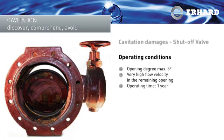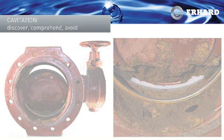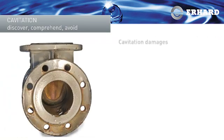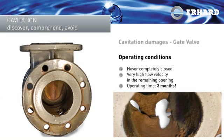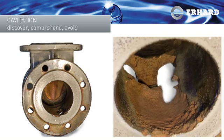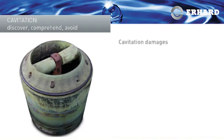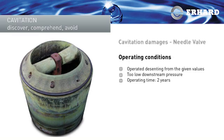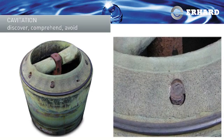Cavitation damage to a shut-off valve used as a control valve — the valve had to be replaced after only a year. This gate valve, which was never completely closed, reached the end of its life after only three months. Cavitation can also occur in control valves if they are used under operating conditions different to those of their design.